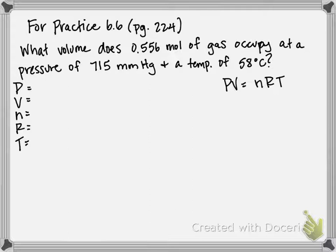The problem states: what volume does 0.556 moles of gas occupy at a pressure of 715 millimeters of mercury and a temperature of 58 degrees C?